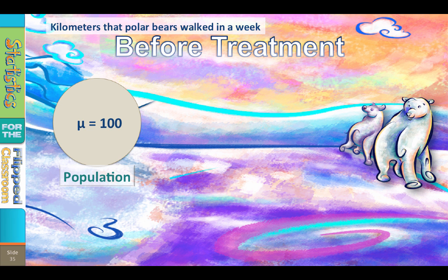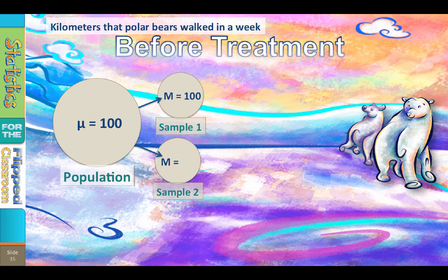If I draw a sample from a population with a mean of 100, what do you predict that the sample mean will be? 100. If I draw a second sample from a population with a mean of 100, what do you predict that sample mean will be? 100. If I draw a third sample, what do you predict the sample mean will be? 100.